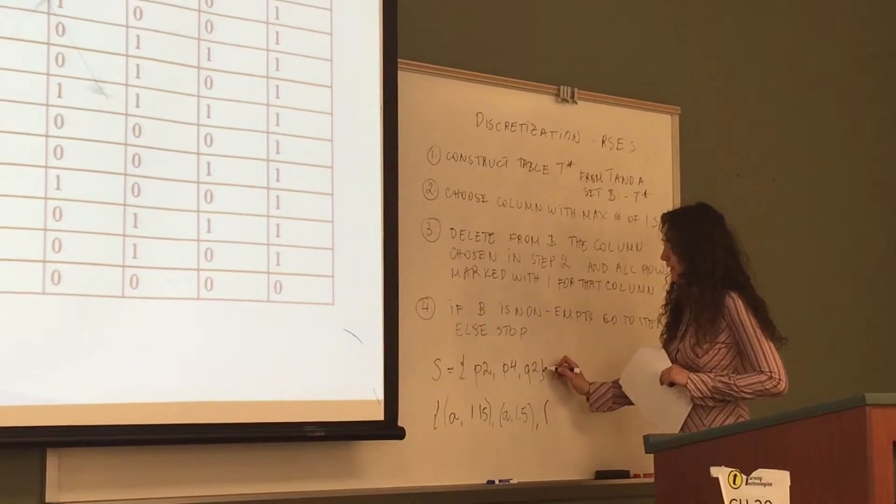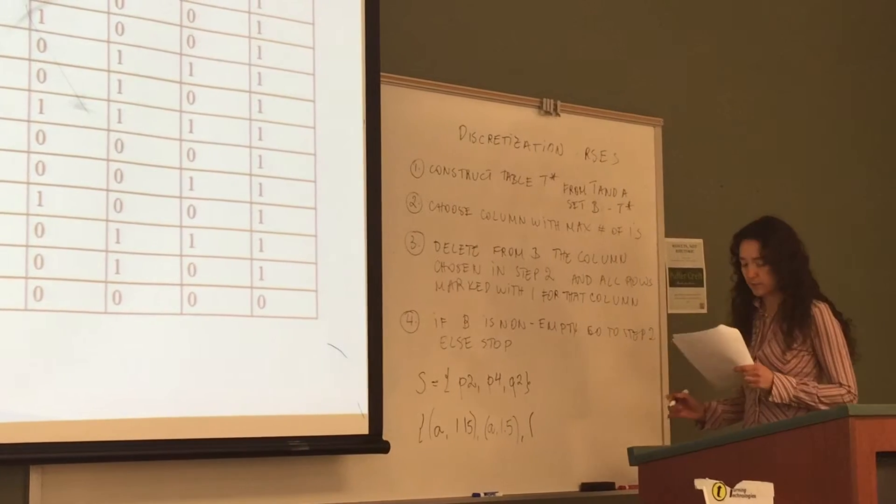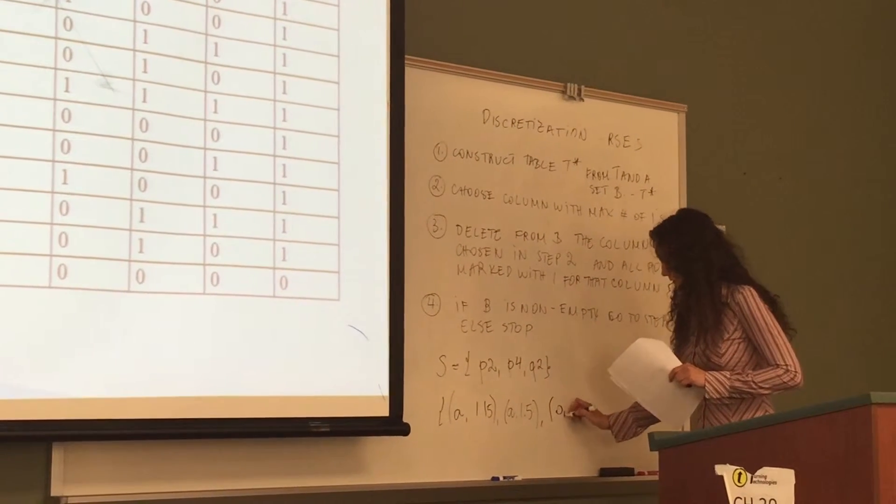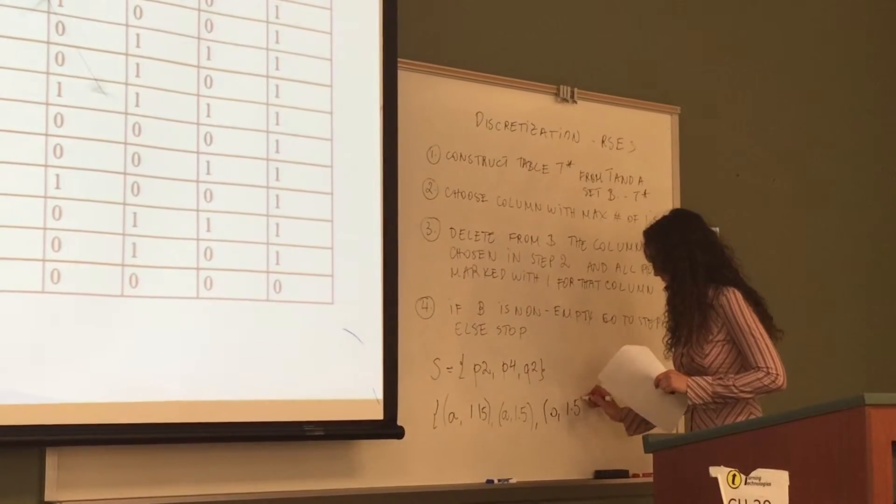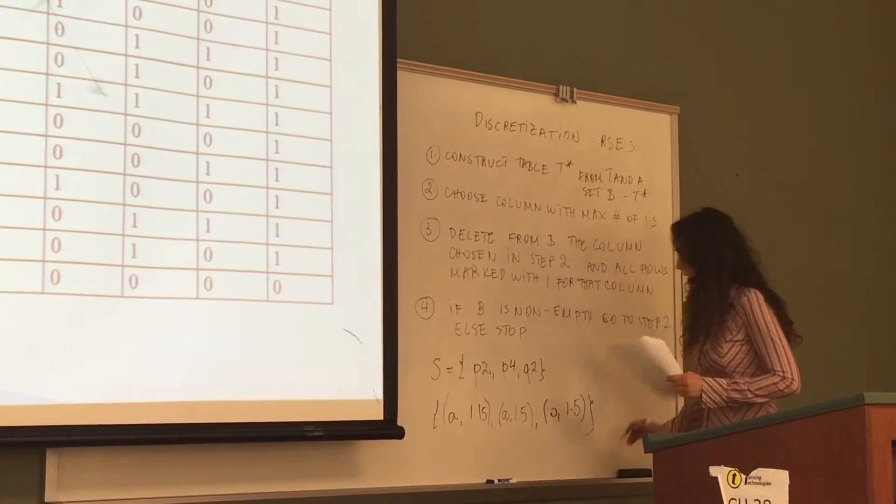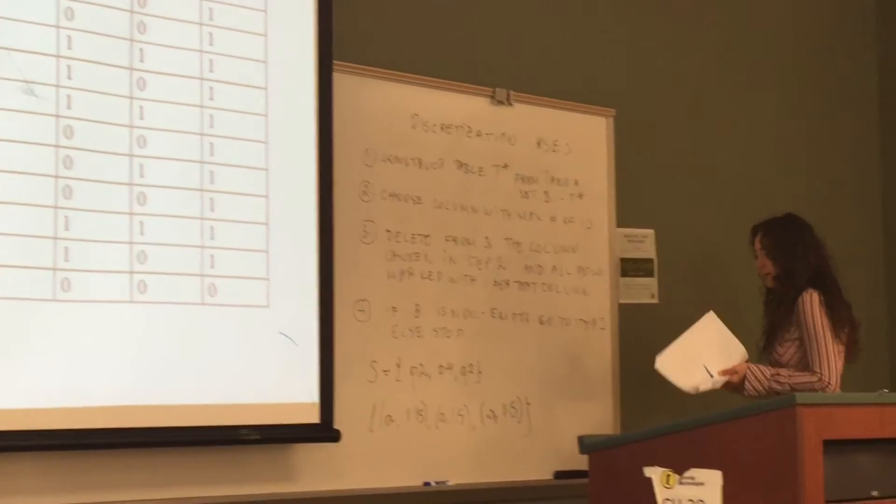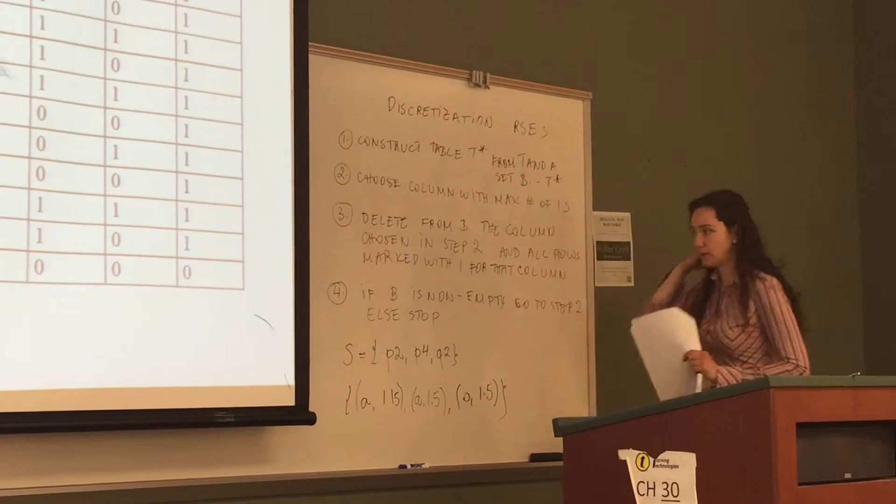And for B we have 1, which is q2, from beginning of B to 1.5 and from 1.5 to the end of B.